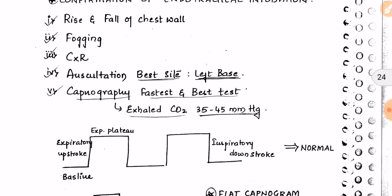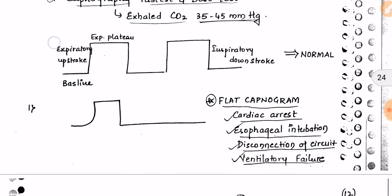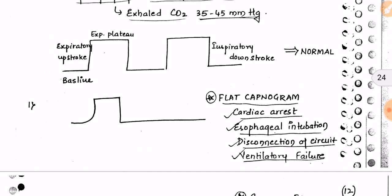Capno stands for CO₂. So capnography is the fastest and best test to confirm endotracheal intubation. If exhaled CO₂ is around 35 to 45 mmHg, intubation has taken place. A normal capnogram shows a baseline, expiratory upstroke, expiratory plateau, and inspiratory downstroke. A flat capnogram — where only an upstroke and downstroke appear — is seen in cardiac arrest.